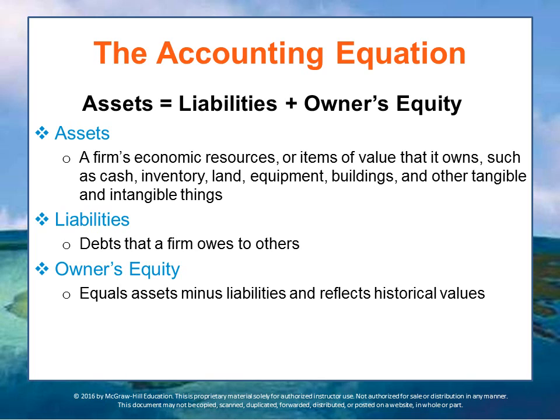There are current assets, like the cash you have on hand. Inventory — if you're a store or manufacturing facility — is something you could sell to get liquidity. Land is a long-term asset, as are equipment, buildings, and other tangible and intangible things you might own, like the rights to certain music if you're a publisher.